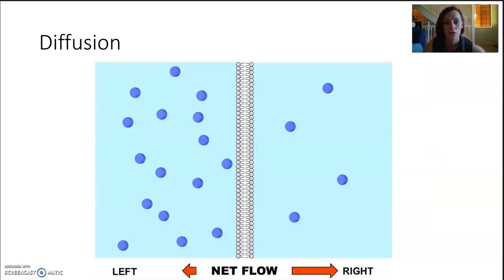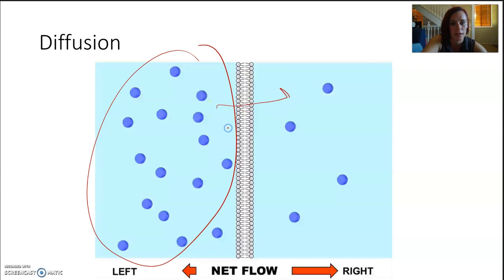So some of these particles, yes, they're going to want to go from here and across, but some of these will travel that way and some of these will travel that way. It's about the net. It's about overall, most of them are going to move in this direction. This can happen without any energy, without any help. These are substances that can just move across the lipid bilayer.